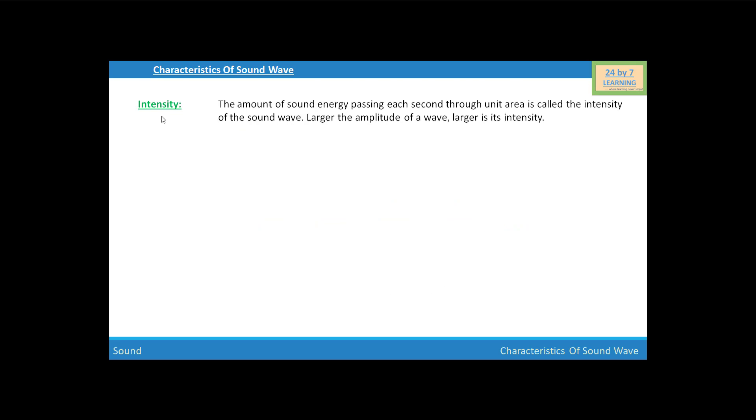Next quantity is intensity. The amount of sound energy passing each second through unit area is called intensity of the sound wave. Larger the amplitude of a wave, larger is its intensity. Intensity is directly proportional to the amplitude squared. As we know, intensity is the amount of sound energy passing each second through unit area. So intensity of a wave equals the energy upon time into area. The SI unit of intensity is joule per second meter square.